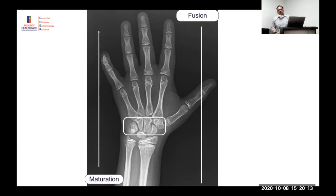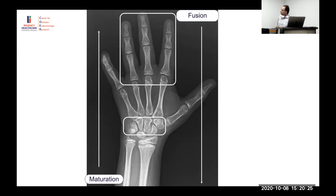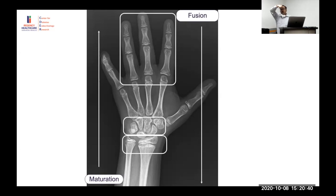Carpal bones are not very reliable markers for bone age assessment. In growth failure, the phalanges are more important. Radius and ulna give information about terminal fusion, but by the time radius and ulna fuse it may be too late to act. For timely intervention, look at the smaller phalanges, not radius and ulna.